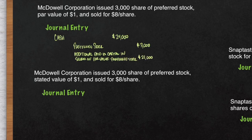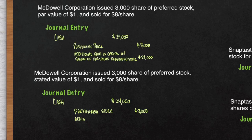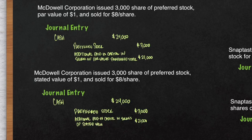Our next example is exactly like our previous example for McDowell Corporation, but in this case, instead of par value, it says stated value. It would still have a debit to cash for $24,000 and a credit to preferred stock for $3,000. There's also the additional paid-in capital, but instead of saying additional paid-in capital in excess of par value, it says stated value, preferred stock. That's the only difference.